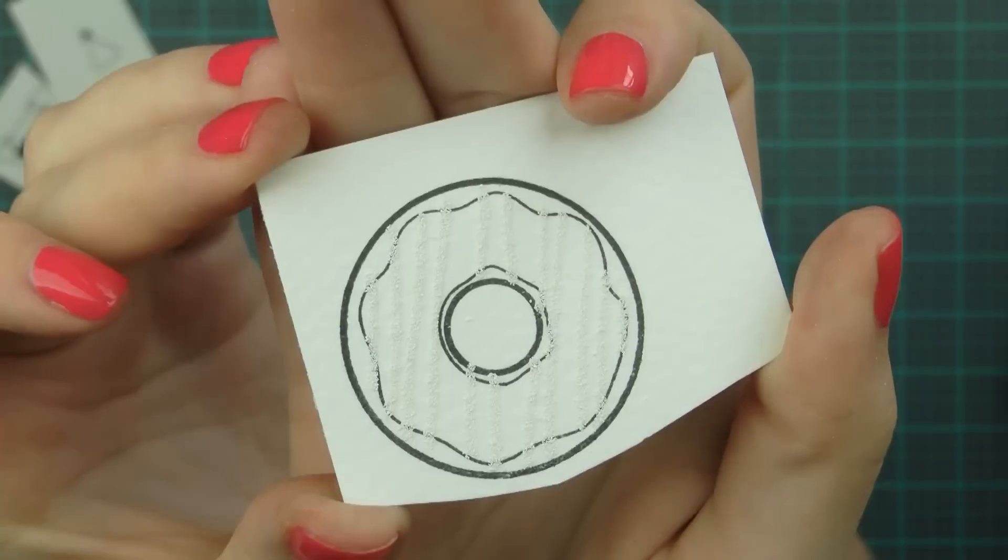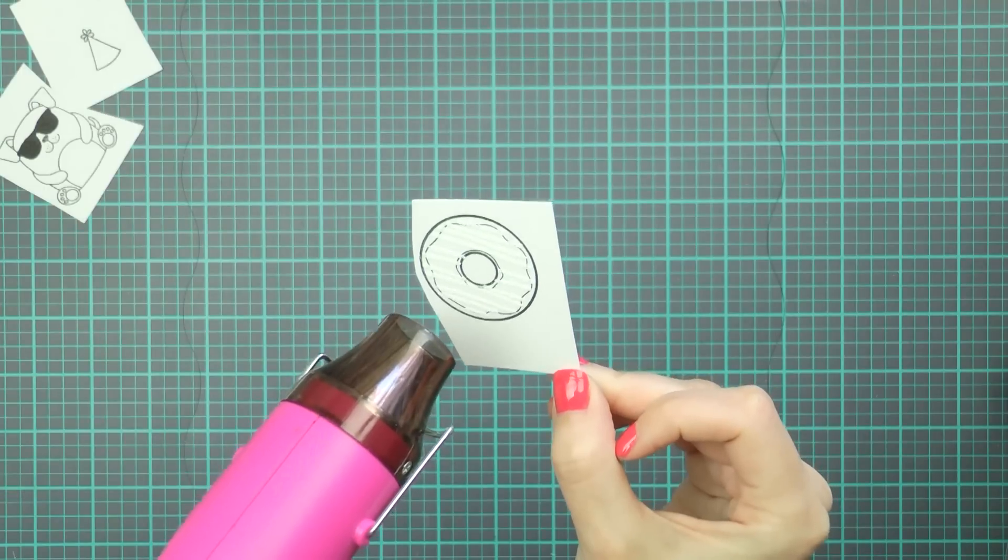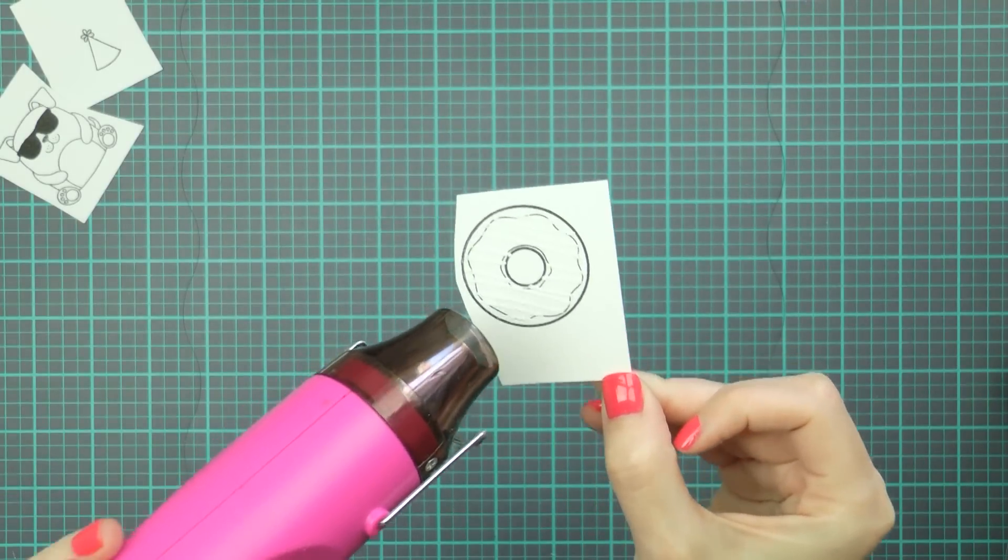Now this is not your regular embossing powder, what this does is it puffs once heat set. So it sort of grows up on the image.